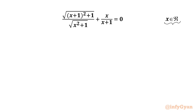Let's get started by writing our denominators cannot be 0. So x cannot be equal to negative 1. Now x squared plus 1 will be always positive for x to be real.